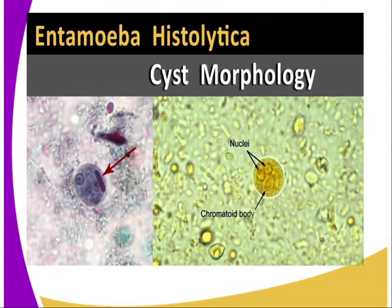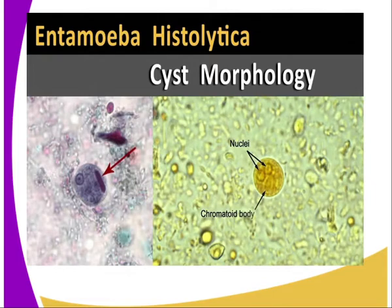The E. histolytica live within the lumen of the colon and feed on bacteria without harming the host. At certain times they infect the mucosal wall of the colon and produce a tissue-dissolving enzyme called histolysine — hence the name histolytica. This results in the formation of ulcers on the colon wall, and the parasites then feed on the red blood cells at the site of the ulcers.